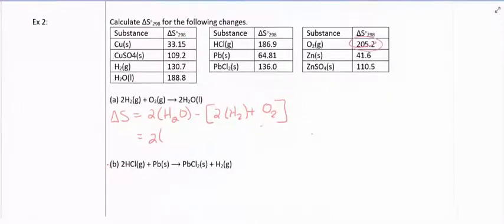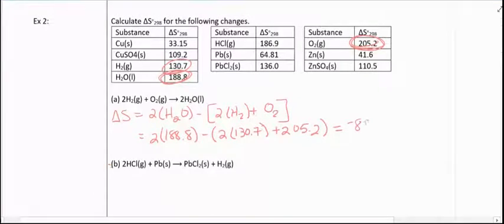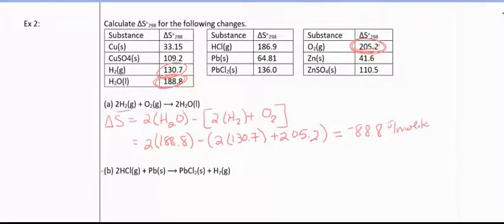But that's not true for entropy, so I just need to look these up on the table. Water, liquid, minus 2 times hydrogen plus oxygen gives me negative 88.9 joules per mole K. So I get a negative delta S, and that makes sense because I'm going from gases to liquid, right? So I should decrease my disorder.